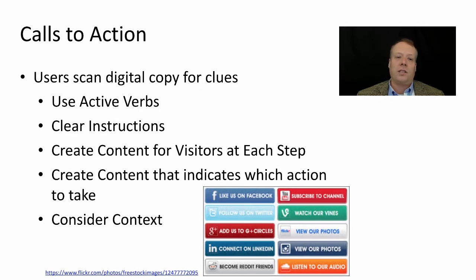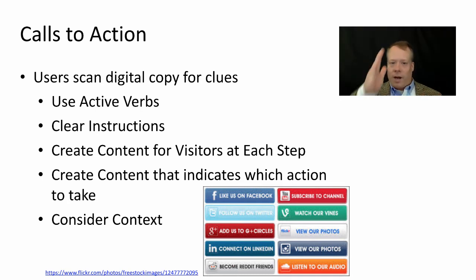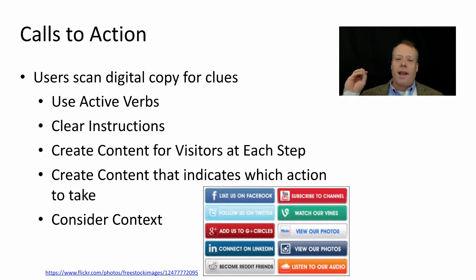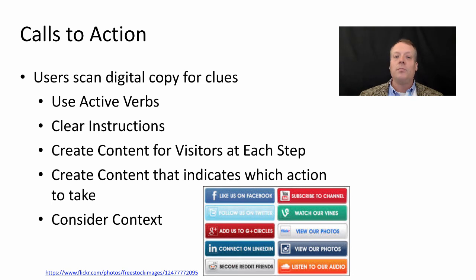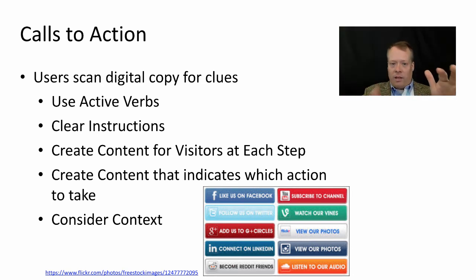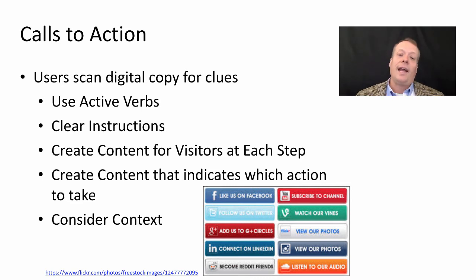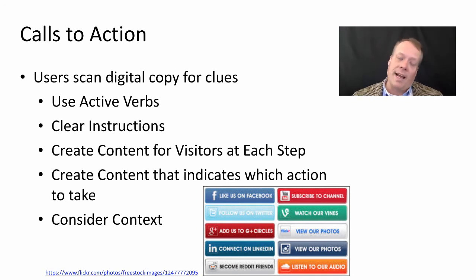Let's take an example of calls to action. Users scan digital copy for clues. They don't read it left to right and straight down the page like a traditional book — they scan it to find the thing they want. They come to your web page with an idea about what they want to do, and you've got to make it very obvious how they can do that. You can do that by using active verbs and having very clear instructions. You can demarcate the instructions with space around them, put them in bold or italics. You should create content for visitors at each step of the consumer buying lifecycle, and that content should indicate what the next step they need to take is in order to complete the action you want them to complete.